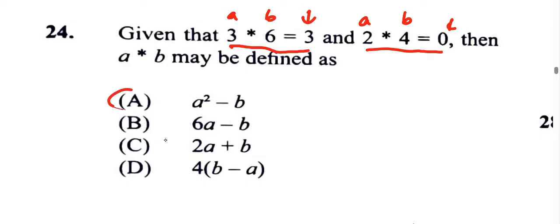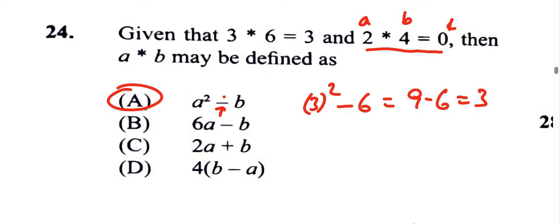Let's try the first option. Looking at 3 * 6, if we square a, that means we're squaring 3, and then we subtract b. b here is 6, so that gives us 9 minus 6 which is 3, and that's what we got. So that's good.